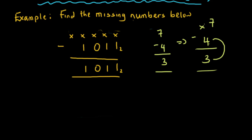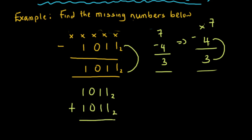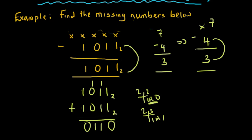We are going to say 1011 in base two plus 1011 in base two. One plus one is two; working in base two we can't write two, so we divide — one remainder zero, write zero, carry one. One plus one plus one is three; divide — one remainder one, write one, carry one. One plus zero plus zero is one. One plus one is two; divide — one remainder zero, write zero, carry one. No more digits, so bring down the one. Our answer is 10110 in base two.